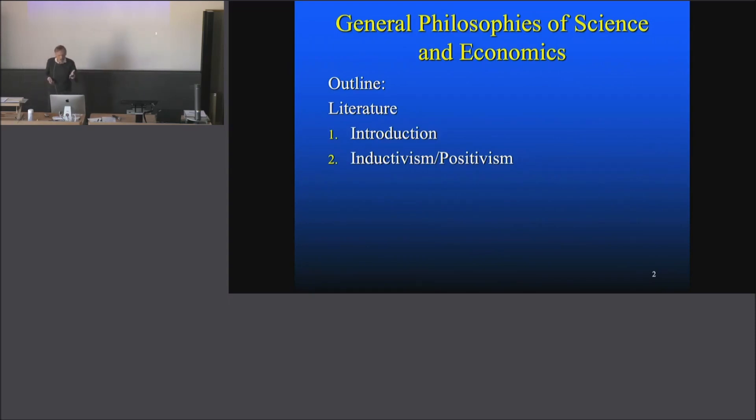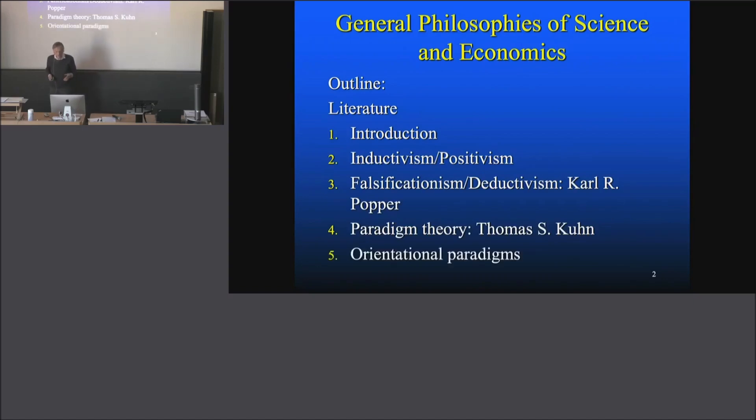One of these positions is inductivism, positivism, falsificationism or deductivism—that's the philosophy of Karl Popper—then paradigm theory, the philosophy of Thomas Kuhn, and finally orientational paradigms. We'll discuss these positions and the connection with economics. What did they do to economics? Was it accepted? Was it not accepted? What happened there?